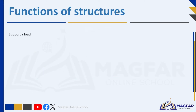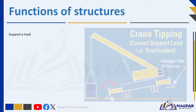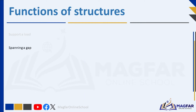Frame structures, shell structures or solid structures are built for specific purposes. They support a load — a structure must be able to support its own weight and the load it has to carry without breaking. A load can be a person, an object or a force. A moving load is known as a dynamic load, and a stationary load is known as a static load.